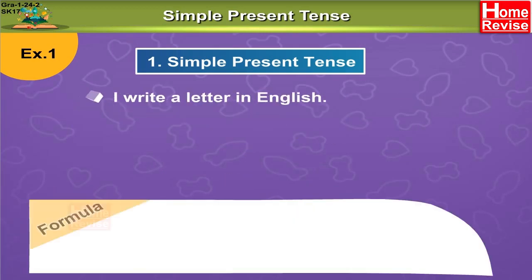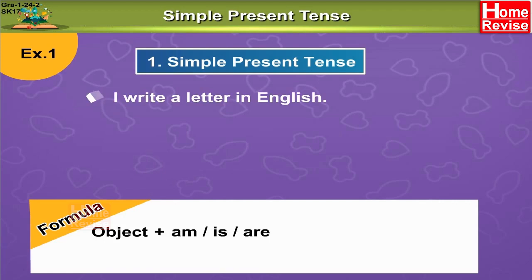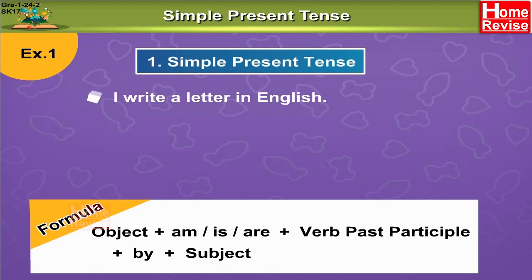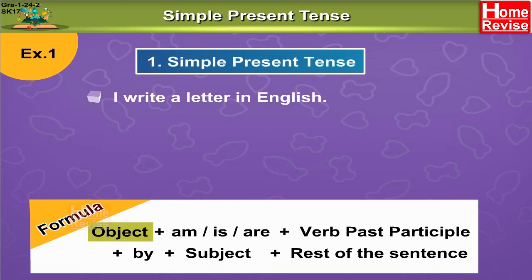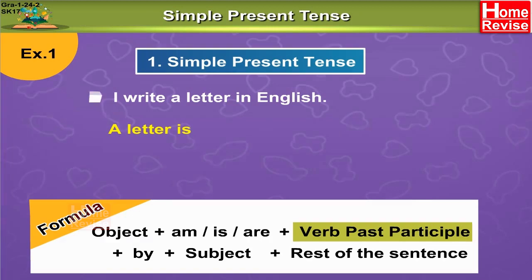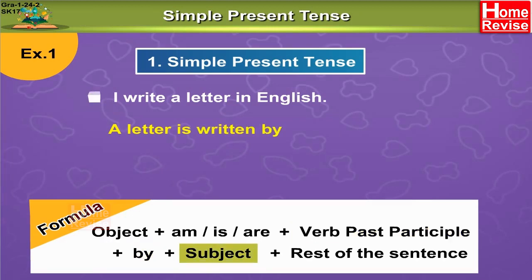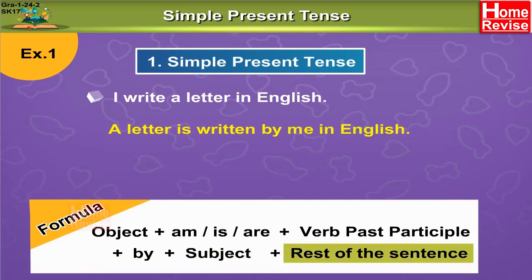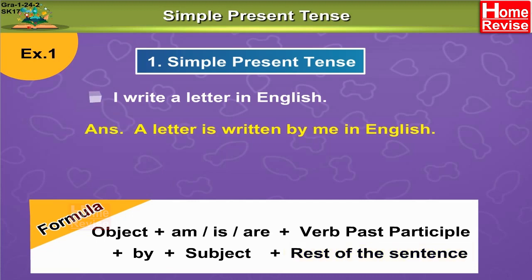You need to understand this formula to change an active voice verb into the passive voice. It is very simple: Object + to be form of the verb + past participle of the verb + by + and then the rest of the sentence. Applying this: a letter — to be form is 'is' — past participle of write is 'written' — by me — in English. So your answer is: a letter is written by me in English.